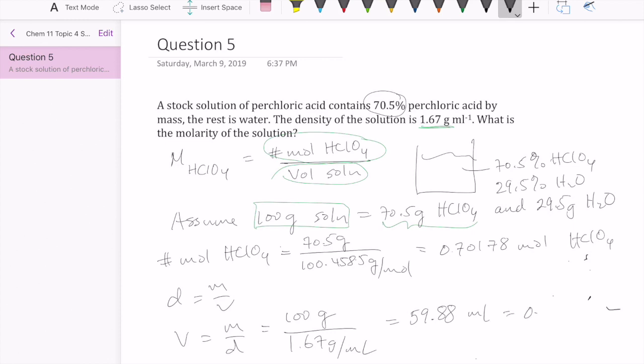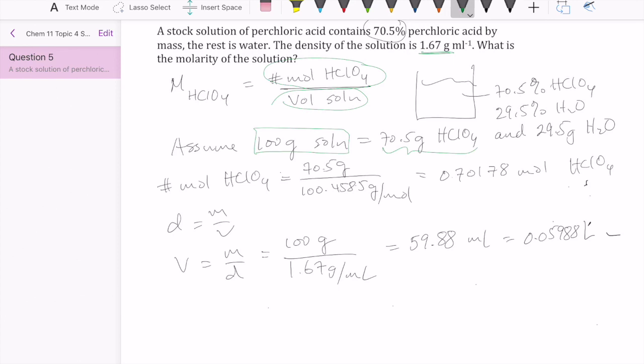Or if we change this to liter, it will be 0.05988 liter. So now that we have both of the numbers we need, the number of moles and the volume, we can just divide them to get the molarity. So take 0.70178 divided by 0.05988 liter, and that should give us 11.72 molar.